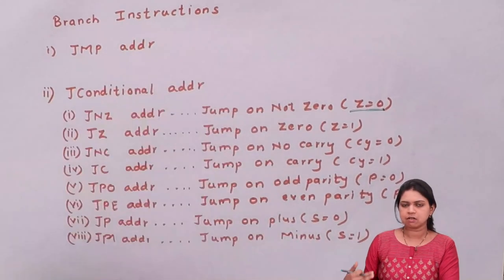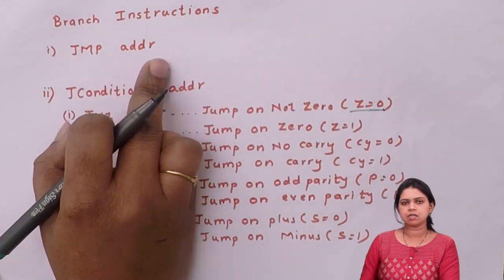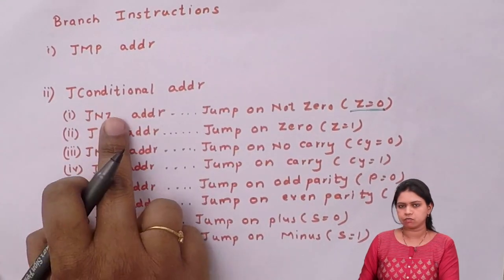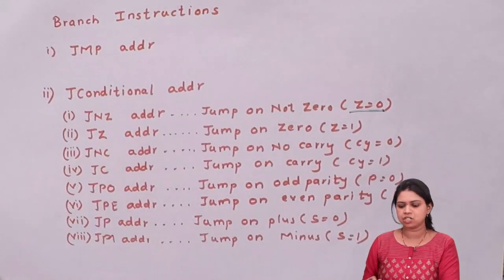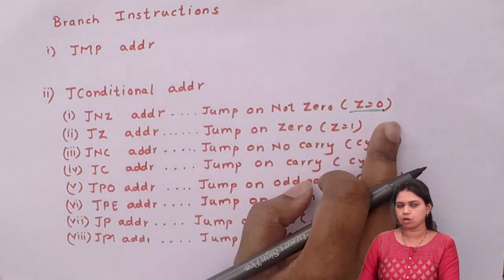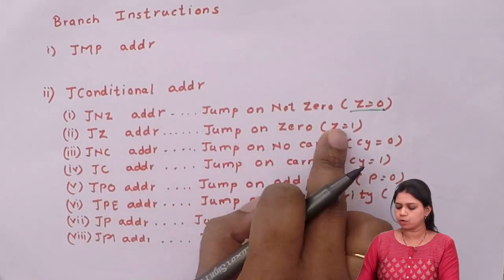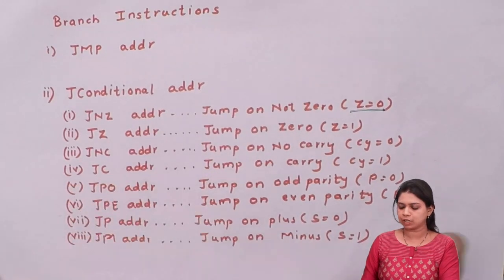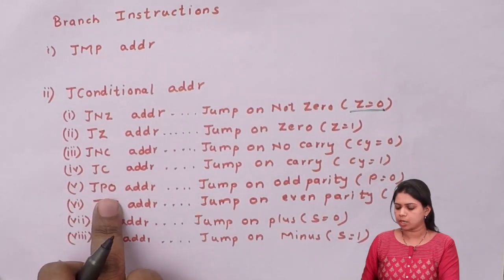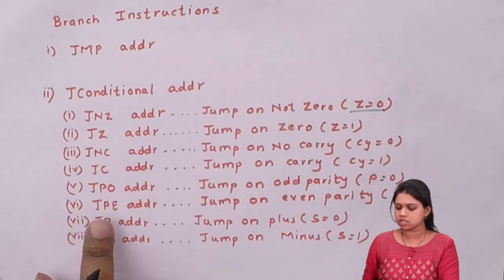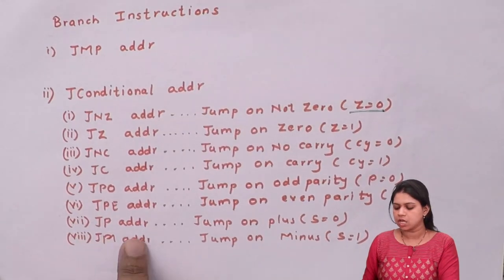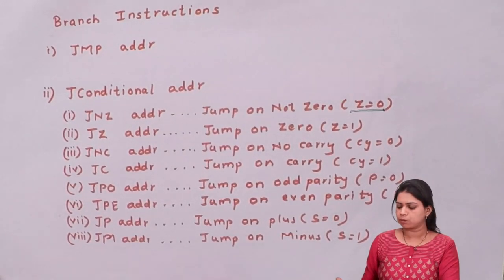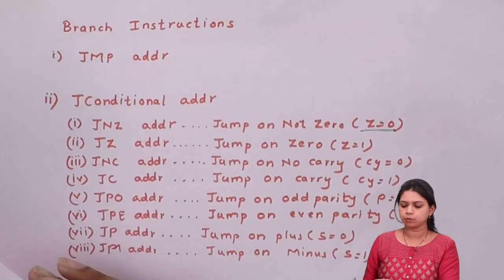Let us have a recap. JMP address — you will be jumping unconditionally. For conditional jumps: JNZ is jump on not zero; JZ is jump on zero; JNC is jump on no carry; JC is jump on carry; JPO is jump on odd parity; JPE is jump on even parity; JP is jump on plus, meaning your sign flag S equals zero; and JN is jump on minus, meaning your S equals one.